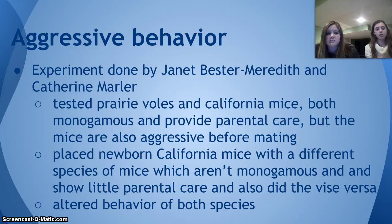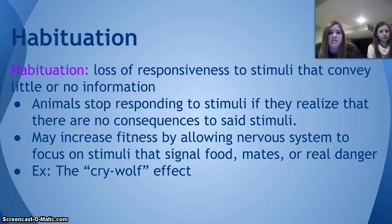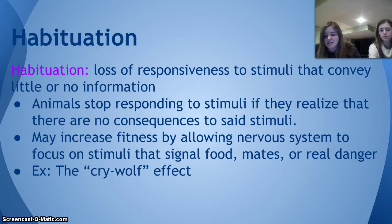There are six types of learning, and learning is a modification of behavior based on specific experiences. The first type is habituation, which is a loss of responsiveness to stimuli that convey little or no new information. Animals stop responding to a stimulus if they realize there are no consequences to it. This can increase fitness by allowing the nervous system to focus on stimuli that signal food, mates, or actual danger. For example, the cry wolf effect: if an animal repeatedly signals danger to its group when there isn't any, the group will eventually stop reacting to that stimulus.